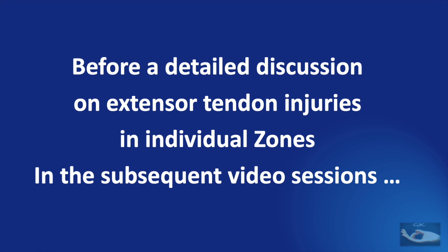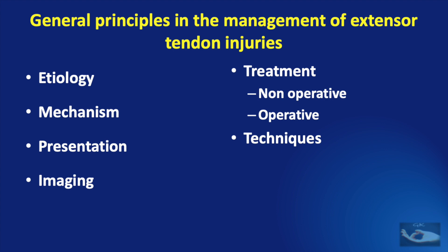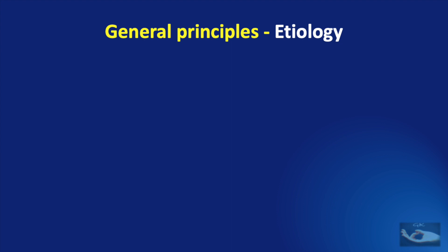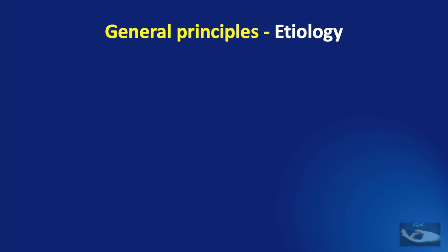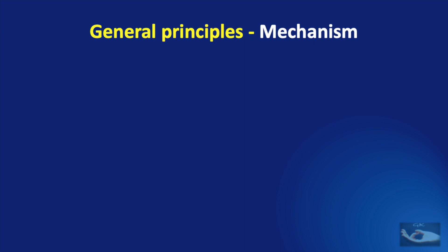It is important to understand the details of extensor tendon injuries in individual zones, which will be seen in subsequent video sessions. Before that, we need a general idea about management, covering etiology, mechanism of injury, presentation, imaging studies, treatment options both non-operative and operative, techniques of surgical repair, rehabilitation, and complications. We need to understand that extensor tendon injuries arise not only in trauma and its sequelae but also in burns and degenerative conditions like rheumatoid arthritis. The mechanism causing injuries in these different zones may vary.